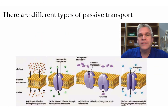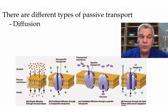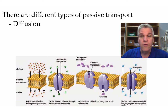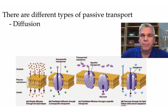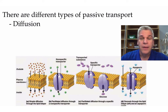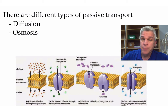There are different types of passive transport. There is simple diffusion, where molecules — because they're small enough — can simply pass through the cell membrane, going from high to low concentrations. An example of this might be oxygen. Oxygen that's in your blood needs to get inside the cell; it goes from a higher concentration outside the cell to inside the cell.